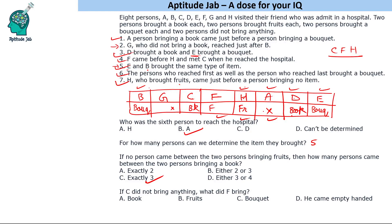Question four: if C did not bring anything, what did F bring? If C brought nothing, we still need one fruit-bringer and one book-bringer among G, C, and F. C is now the nothing-bringer, so G brings fruits and F brings a book. Therefore, if C did not bring anything, F brought a book. That is the complete solution to the set.